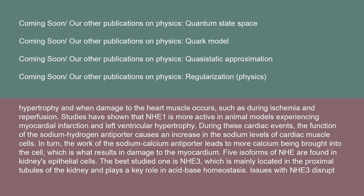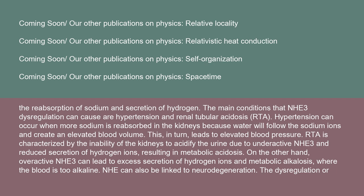Five isoforms of NHE are found in kidney epithelial cells. The best-studied is NHE-3, located mainly in the proximal tubules and playing a key role in acid-base homeostasis. Issues with NHE-3 disrupt reabsorption of sodium and secretion of hydrogen. NHE-3 dysregulation can cause hypertension — when more sodium is reabsorbed, water follows and creates elevated blood volume and elevated blood pressure. NHE-3 dysregulation can also cause renal tubular acidosis (RTA), characterized by the inability to acidify the urine and resulting in metabolic acidosis. Conversely, overactive NHE-3 can lead to metabolic alkalosis.